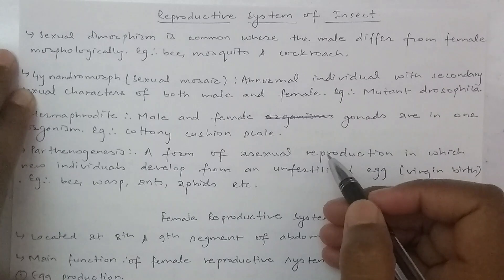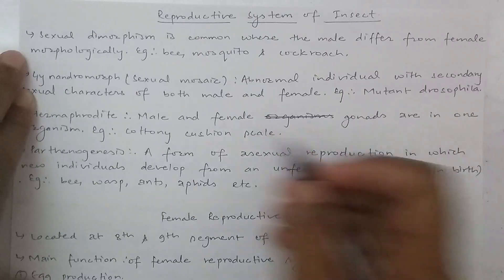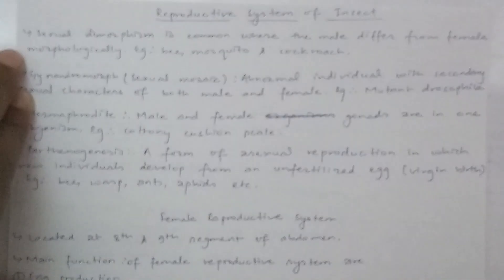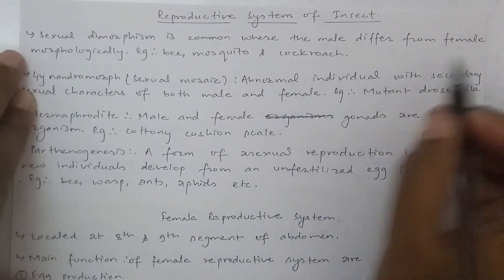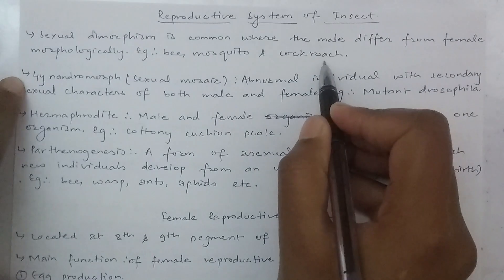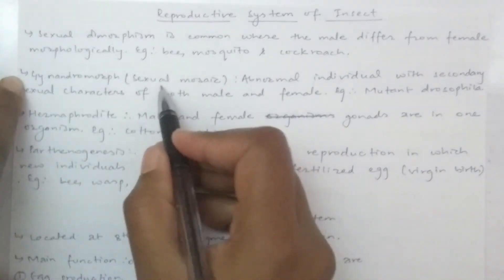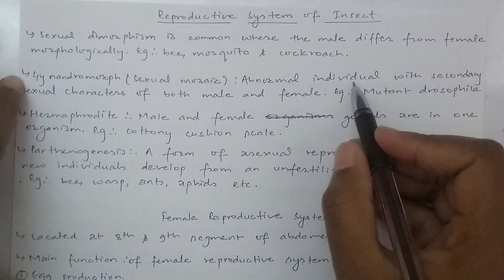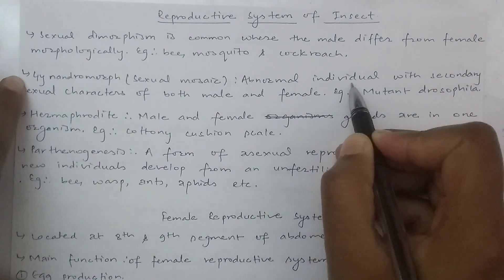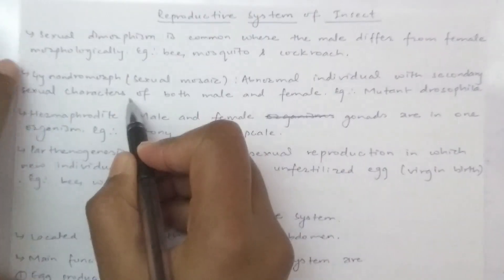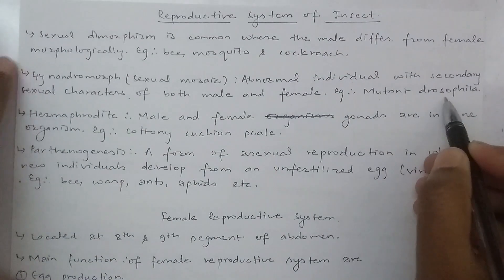First we will discuss some terminology. Sexual dimorphism: males and females are morphologically distinguishable — males differ from females. For example, bee, musculature, and cockroach. Gynandromorph: a sexual mosaic. In this case, abnormal individuals exhibit both male and female secondary sexual characters. For example, mutant Drosophila.